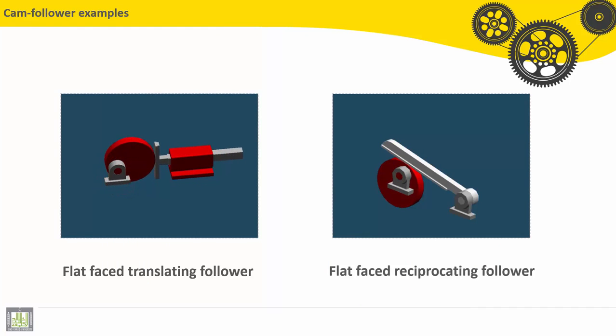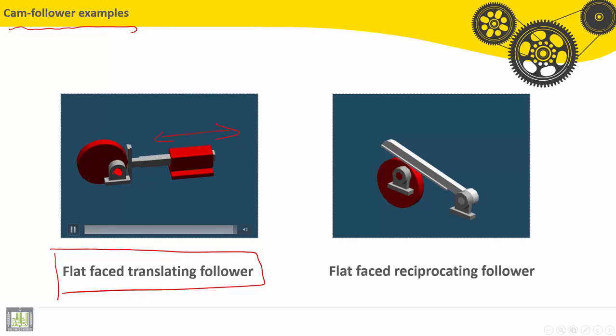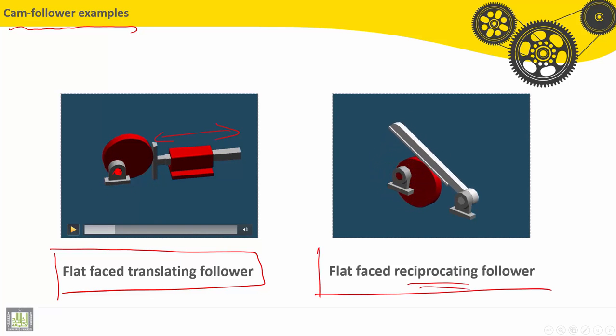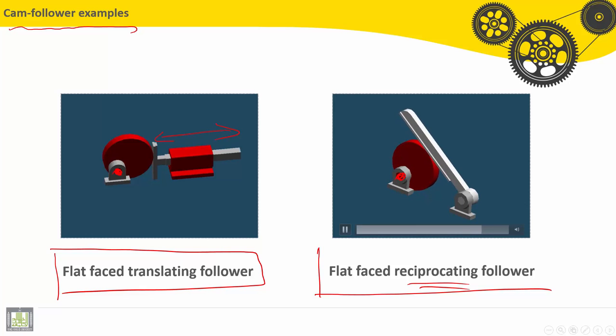Here also, we have something called cam follower examples. Flat faced translating follower. The input here is the rotation of this axis, and the output is the translation here. On the second video, we can see the flat faced reciprocating follower. So, the input also is a rotation here, and the output is a reciprocating follower, alternative motion for the follower.